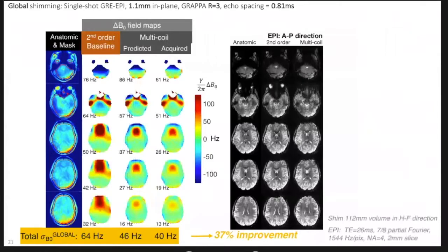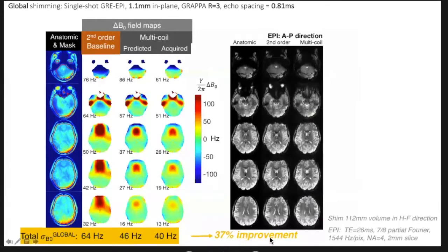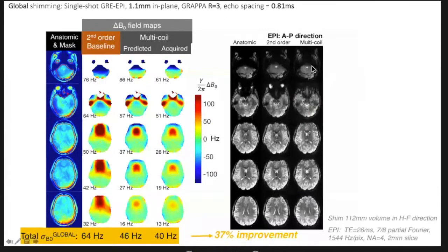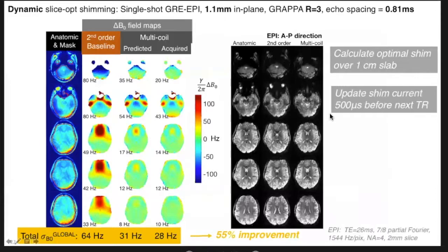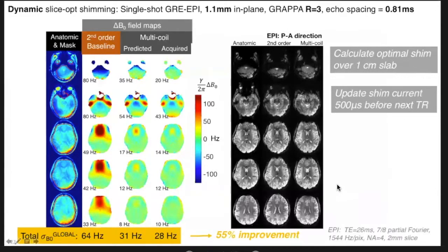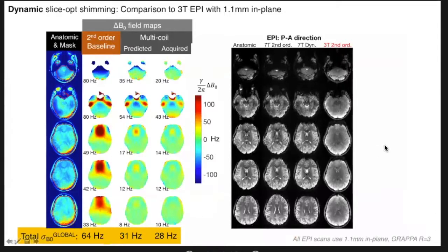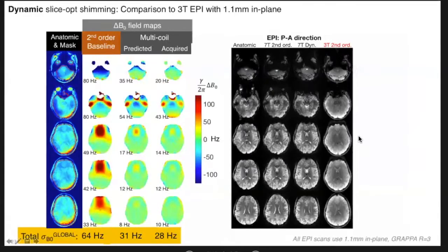So what does this do for the distortion? Here's the field maps for global shimming, and here is the distortion. This is a contrast-matched, undistorted GRE. This is the EPI, AP and PA phase-encoded with the second-order shim and the multi-coil. And you can see ventricles aren't moving around as much. In the deep brain, the medulla and the cervical spine don't move as much. It's a noticeable improvement. But where you really get the payoff is with dynamic shimming. Here, we shim each slice optimally so it's easier to flatten out the shim. You can see the field maps also look better. And just for comparison, here's the same protocol run at 3T, the same echo spacing, same grappa factor. And we're almost down to the distortion that we would get on a garden variety 3T scan. So we're pretty excited about this.